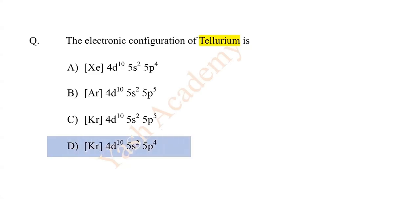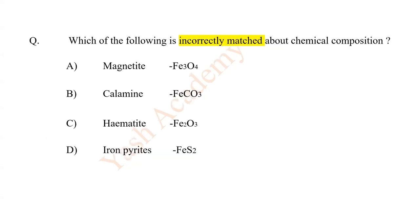The electronic configuration of tellurium — answer is D. Which of the following is incorrectly matched about chemical composition? The answer is D: Calamine.